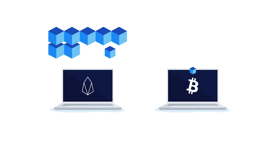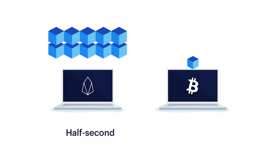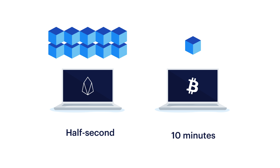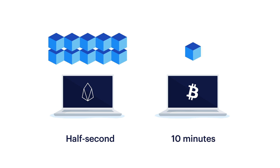All of this happens very quickly. EOSIO produces a block every half second. By comparison, on Bitcoin, a block is produced every 10 minutes.